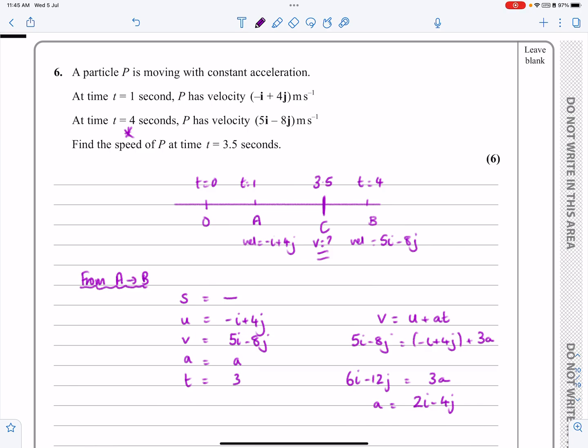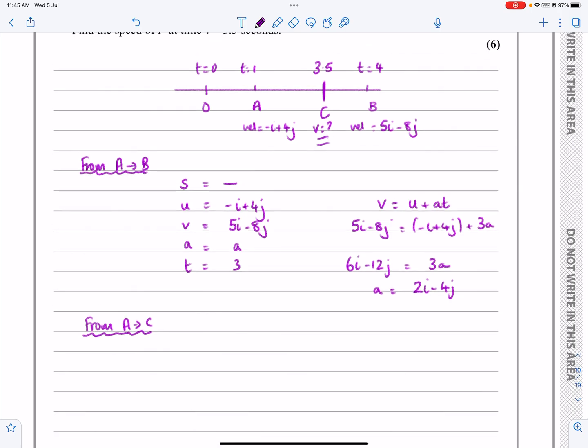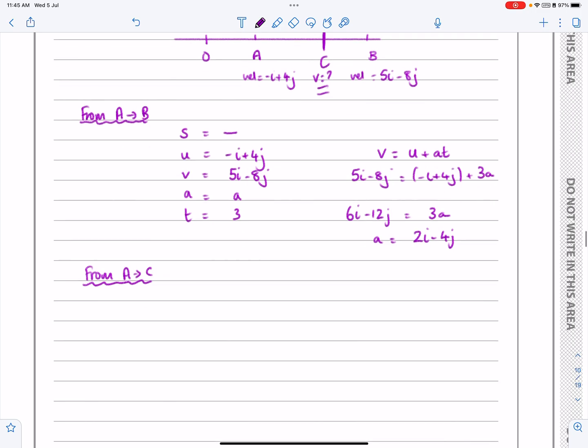I've got my A from the first part. A is constant all the way across this journey. If I now want to work out what's going on at C, I'm going to consider the journey from A to C this time. It doesn't really need it, but it helps me not make mistakes and makes it clear for the examiner.